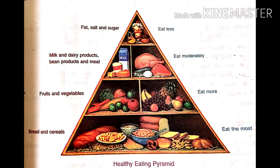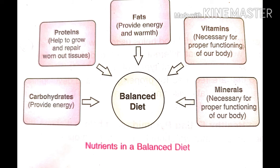Following the food pyramid as a guide will help us to get the right balance of nutritious food. We already know that there are different types of foods: energy giving food, body building foods and protective foods, and these foods should be taken in appropriate amounts so that our diet is balanced.